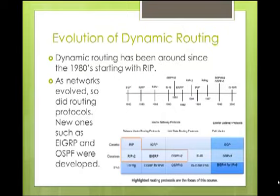Dynamic routing has been around since the 1980s, starting with RIP. RIP was the very first dynamic routing protocol that was developed. As networks evolved, so did routing protocols. New ones such as EIGRP and OSPF were developed. We have even newer ones for IP version 6, such as ISIS V6 and RIP for version 6. Newer ones with better features have come about, such as EIGRP and OSPF.